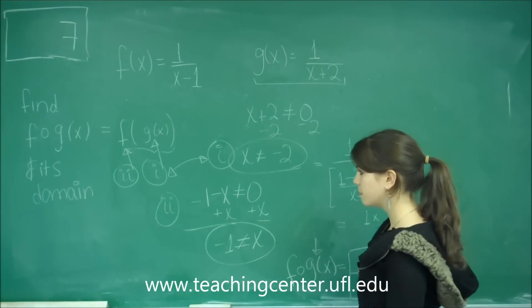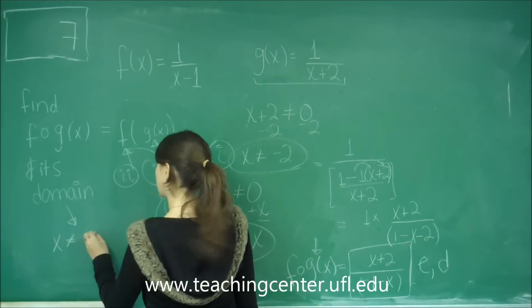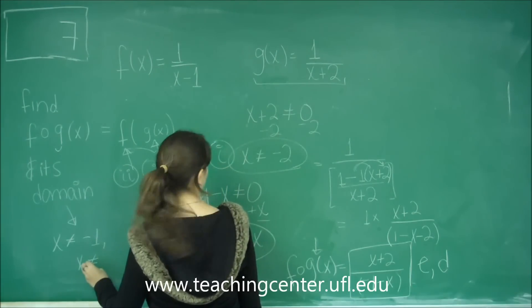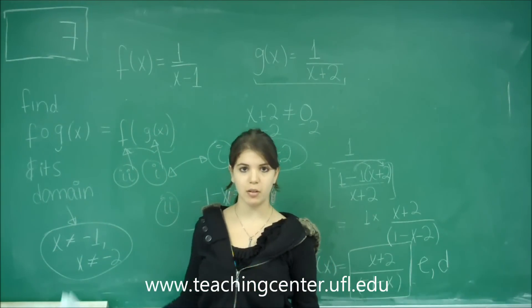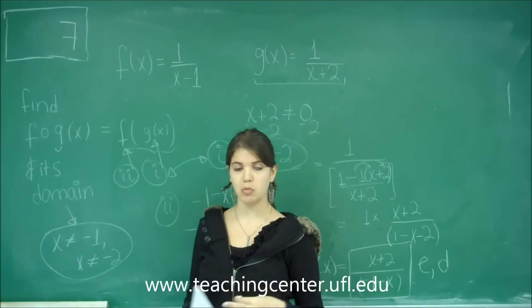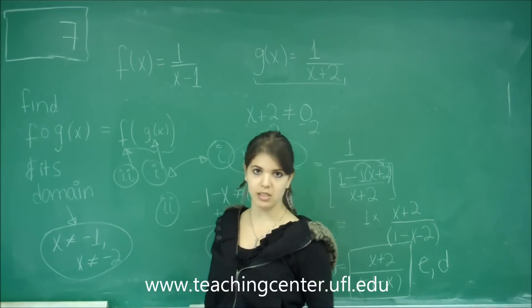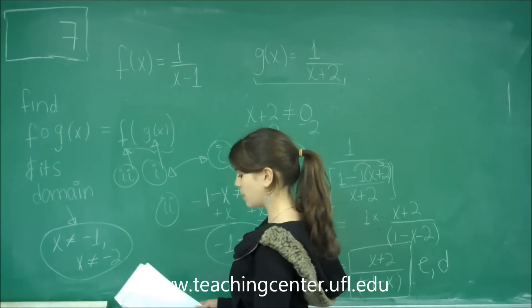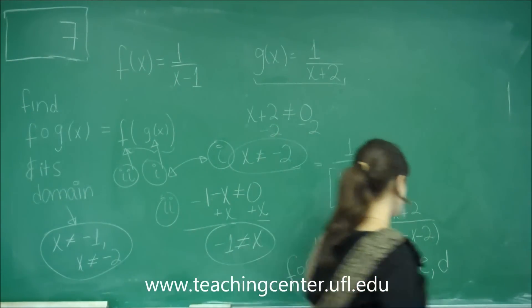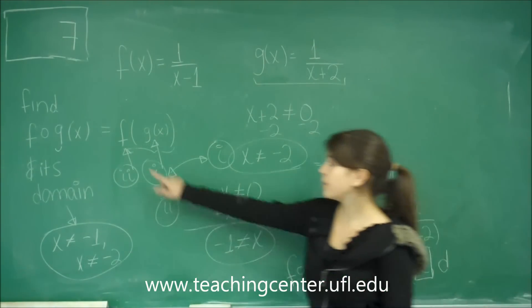So the final answer is the domain is x is not equal to negative 1 and x is not equal to 2. Many of these problems you have to combine the two domains. If we have a situation where you have greater than, less than, something like that, then you would make a number line to combine them. But in this case it's just not equal to. Since those numbers are not the same we don't have to combine them. It's just two different domains. So the answer is going to be E.